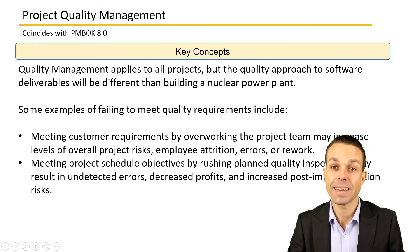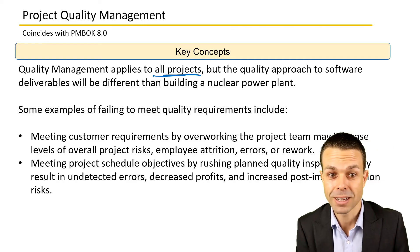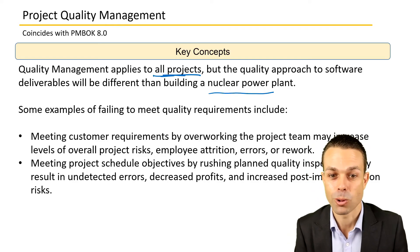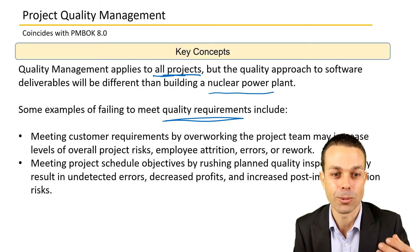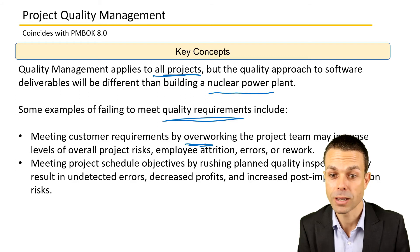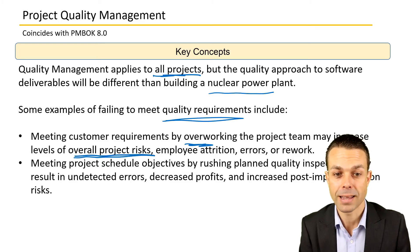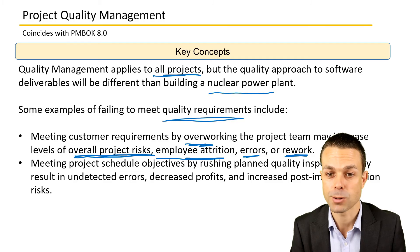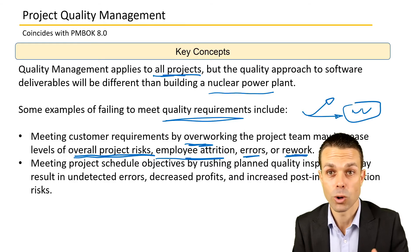Key concepts for project quality management: it applies to all projects, but the quality approach for software deliverables will be different than building a structure or a nuclear power plant. There are examples of failing to meet quality requirements, and they're never good. Consequences include overworking the project team, increased overall project risk, employee attrition, more errors, and more rework. There's a careful balance a project manager needs to make — you may have a deadline or scheduled milestone, but you have to manage that carefully.